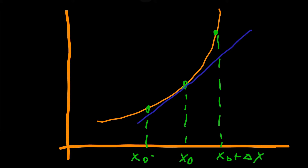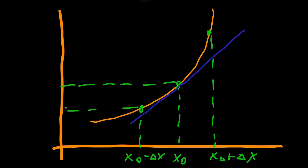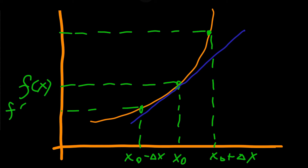We will write the value of this function as f at x0, f at x0 minus delta x, and f at x0 plus delta x. And we will use this notation in further writing.